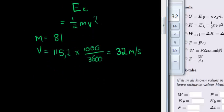Now with that in mind, we can substitute into our formula, which is half mass of 81. So that's the kinetic energy, a half mass of 81 times the velocity 32, that is squared.